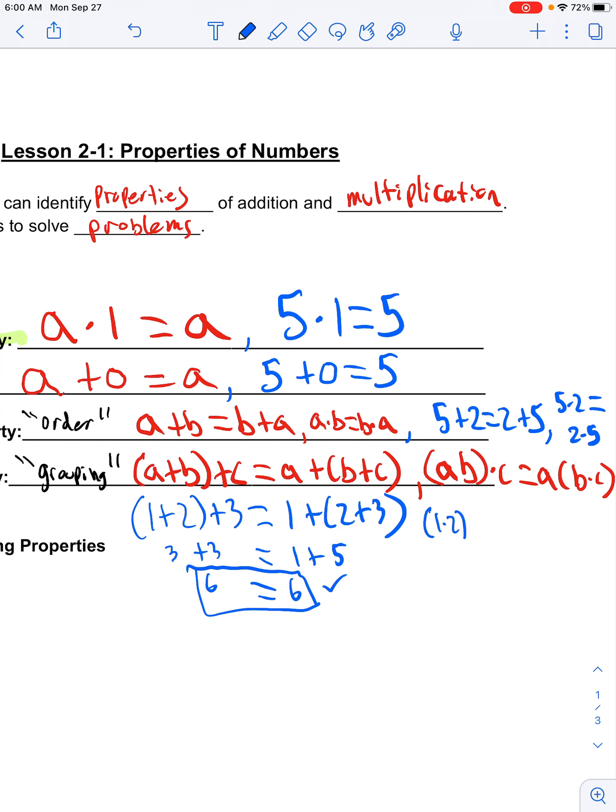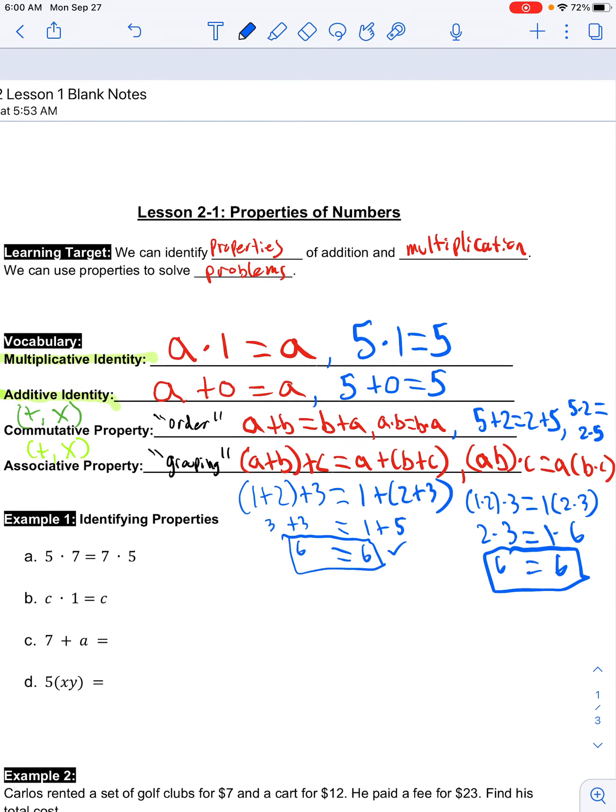Similar over here. One times two times three equals one, parentheses two times three. One times two is two. Two times three is six. And then one times two times three is six. Because of our multiplicative identity, we know that we get the same answer.